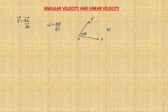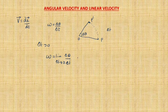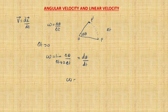So here we have discussed the rate of change of linear displacement for linear velocity, and angular velocity means the rate of change of angular displacement. Now if delta t tends to 0, omega becomes the limit as delta t tends to 0 of delta theta divided by delta t, which can be written as d theta divided by dt. So omega is equal to d theta divided by dt, whereas linear velocity v is equal to dx divided by dt.